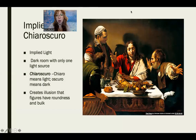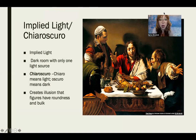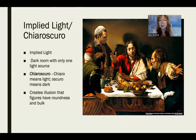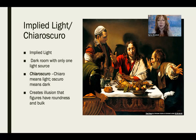Another part of art theory within light is implied light, or chiaroscuro. Implied light is when there is a dark room with only one light source — we can see a clear light source coming from the front left of this image, illuminating the whole piece. Chiaroscuro translates to 'chiaro,' meaning light, and 'oscuro,' meaning dark — needing light and dark to understand an image. It creates the illusion that figures have roundness and volume by creating this very dynamic light.